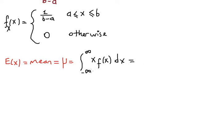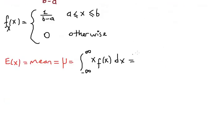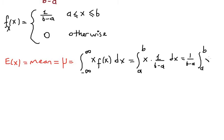Since the density function is zero outside the interval, there is no contribution before a or after b. So we are technically integrating between a and b. From the definition, we change the limits of integration from a to b of x times the density function, which is one over b minus a, dx. Since one over b minus a is constant, we pull it in front of the integral, leaving just x to integrate.